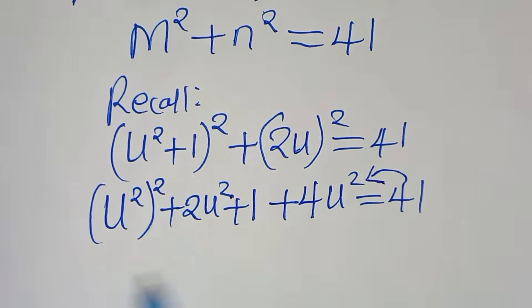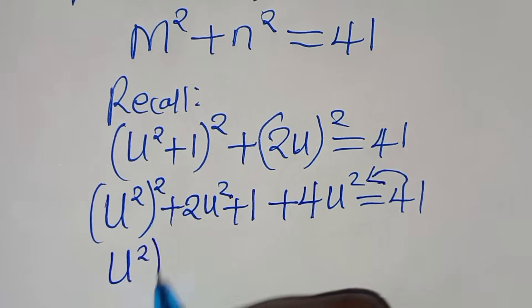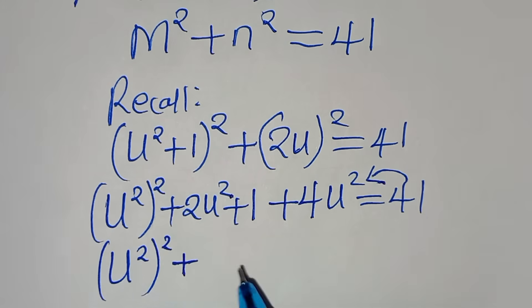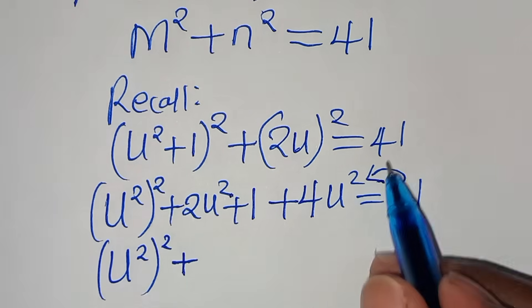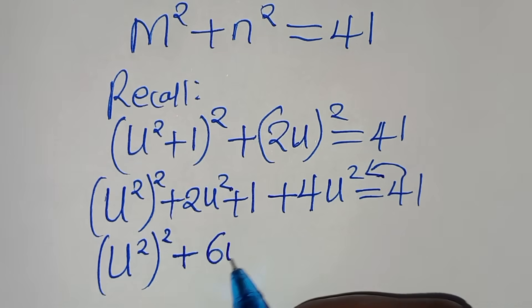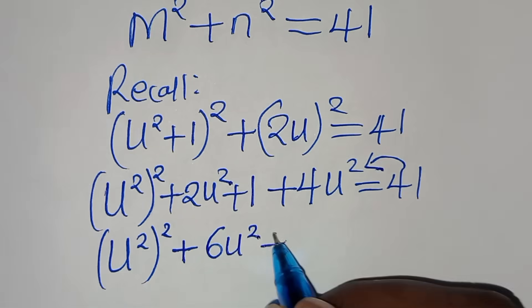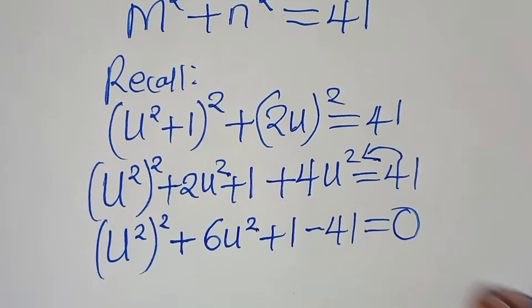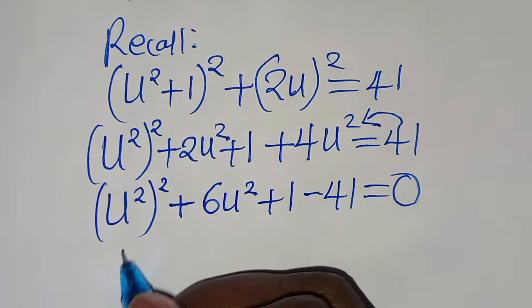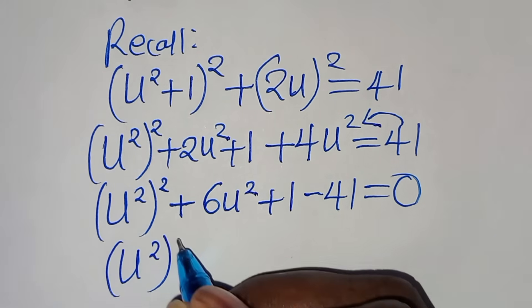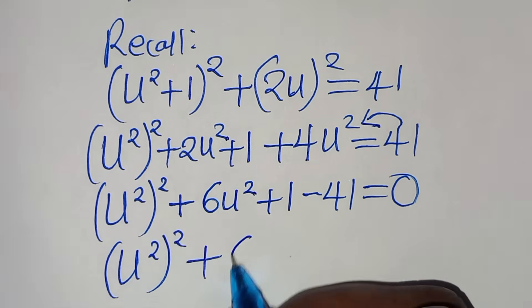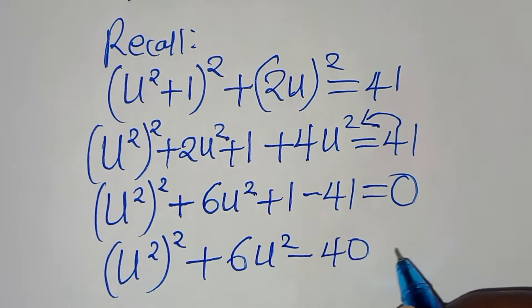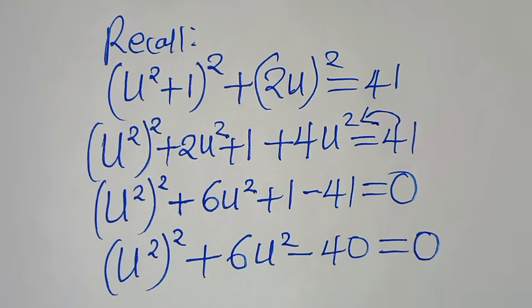Taking 41 to the left-hand side: u⁴ + 2u² + 4u² + 1 − 41 = 0, which simplifies to u⁴ + 6u² − 40 = 0.